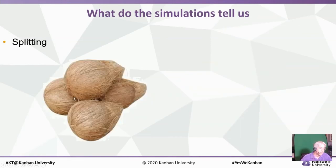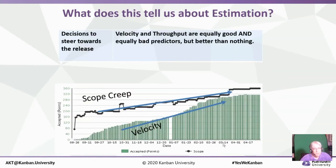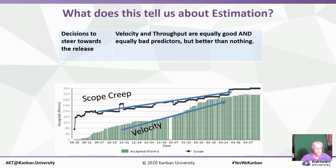The simulations also tell us: if I do have coconuts, I should see if I can split those into smaller pieces. Usually in knowledge work, particularly in software development, it's rare that we can only work on a coconut as a whole — we usually can split it down, and that splitting is a good idea. Velocity and throughput are equally good and equally bad predictors for steering towards a release, but they're better than nothing. It is something that can help us — understanding how scope is developing, working at the scope line and the velocity line where they intersect — perfectly valid. You can look at velocity or throughput the same way; they're both useful tools with their limitations.